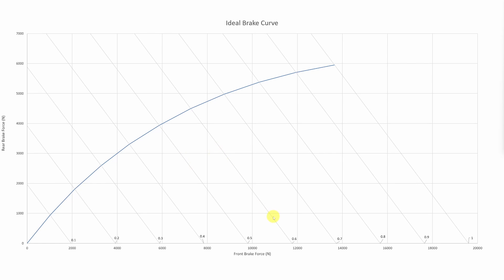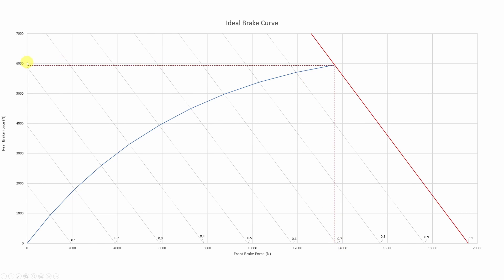Let's look at how to read this curve. The first thing we need to know is what type of surface we are on. Let's start with dry pavement, which we will assume has a friction coefficient of 1. Look for the diagonal line marked 1, and follow it until we reach the curve. From there, we can go down and read the front brake force, and we can go over and read the rear brake force. What this is saying is that on dry pavement, our vehicle with an ideal brake system could generate about 13,500 newtons of brake force on the front axle, and just under 6,000 newtons of brake force on the rear axle.